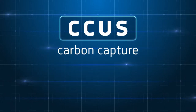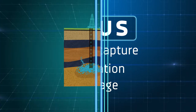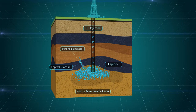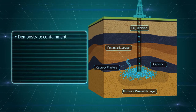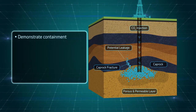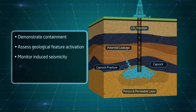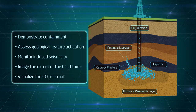CCUS — carbon capture, utilization and storage. ESG's tailored solutions mitigate risk and improve asset performance by enabling operators to demonstrate containment, assess geological feature activation, monitor induced seismicity, image the extent of the CO₂ plume, and visualize the CO₂-oil front.